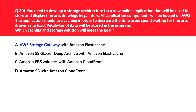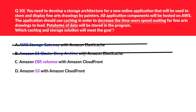Option A — AWS Storage Gateway — has no mention of on-premises in the question, and it can't store petabytes of data. Option B — S3 Glacier Deep Archive — would increase the time users spend waiting for drawings to load, which we certainly don't want. Between options C (EBS volumes) and D (S3), S3 represents a better architecture especially for petabyte-scale data storage as mentioned in the question. Therefore we reject C and lock D as the correct answer.